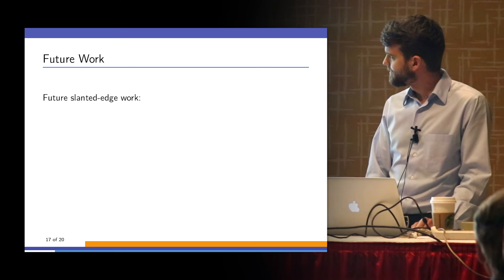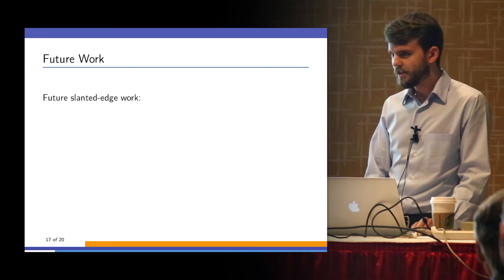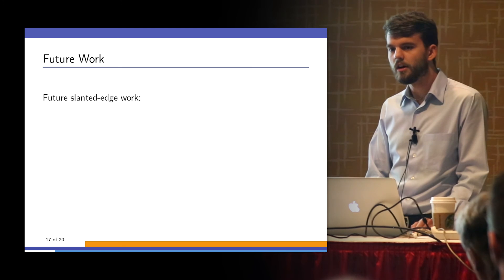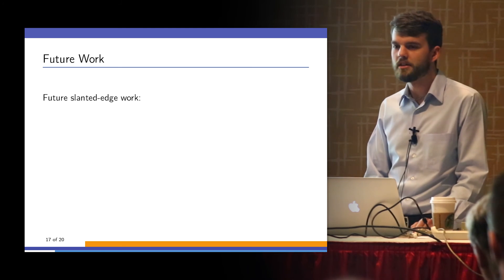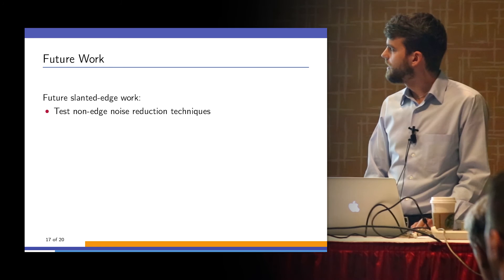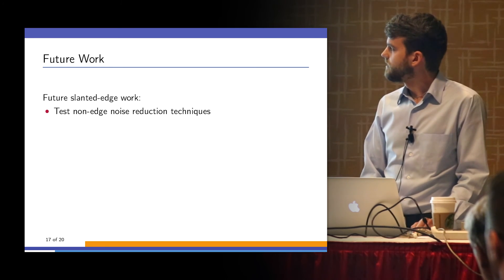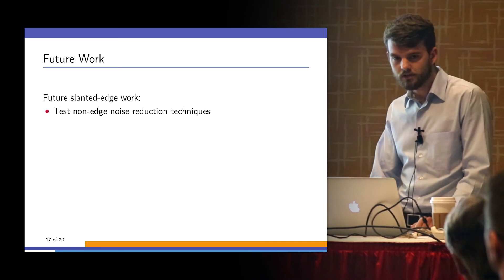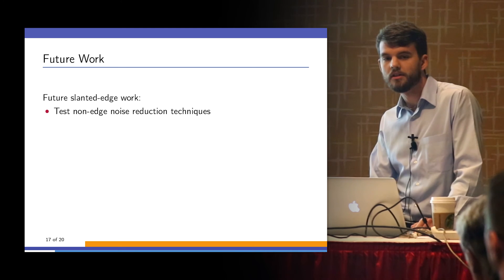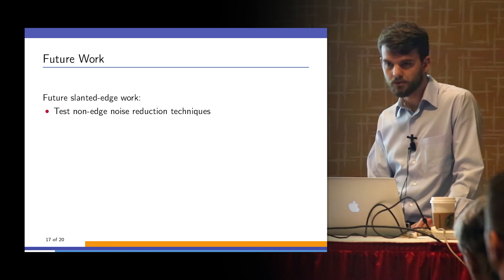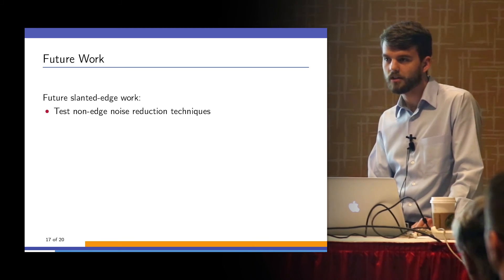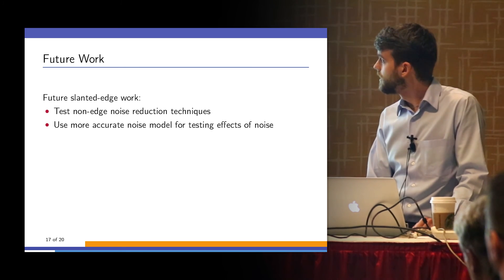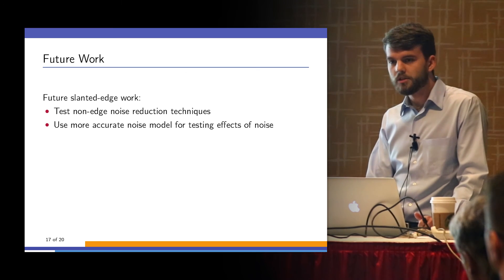A little bit of future work. Coming back to the slanted edge stuff, there's a lot more to talk about here. The paper goes over a little more about some of the statistics that are going on when you introduce noise at different contrast levels that I didn't touch on here. There's also a body of work Peter Burns presented on last year related to performing noise reduction on non-edge areas to reduce the impact of noise on the final MTF calculation. Investigating how that affects some of the statistics would be useful. Using a more accurate noise model for doing the contrast measurements.